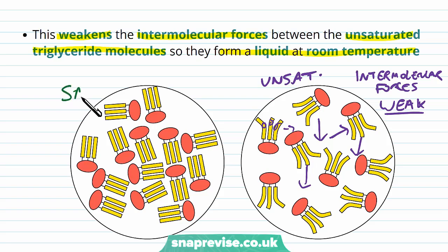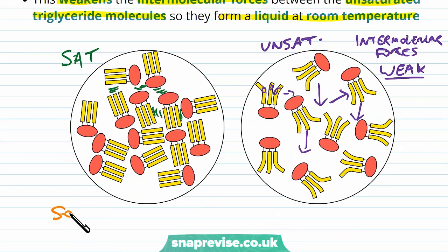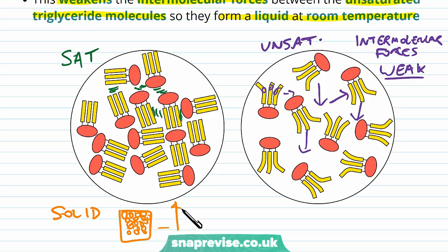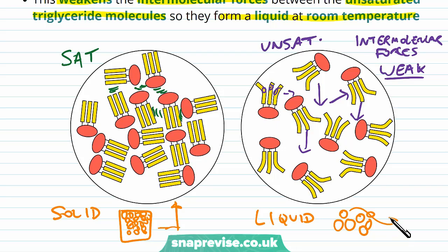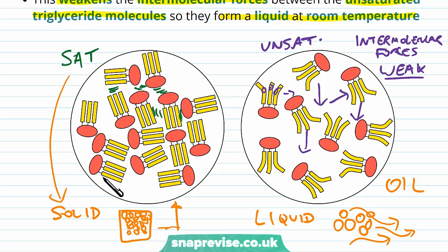With saturated fatty acids, the intermolecular forces are much stronger because they pack closely together and take part in many more intermolecular interactions. In a solid, particles pack very tightly and rigidly stick together — this is why it doesn't flow, just like saturated triglycerides. In a liquid like an oil, particles are more spaced out and forces between them are weaker, so they flow. This is why unsaturated fatty acids form liquid oils and saturated fatty acids form solid fats.